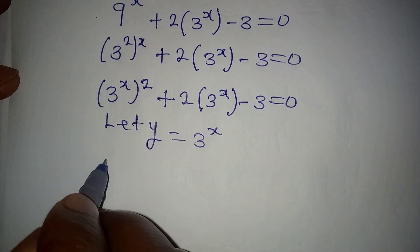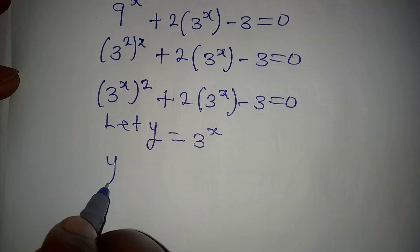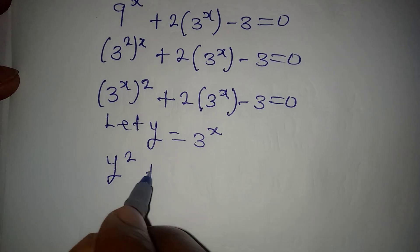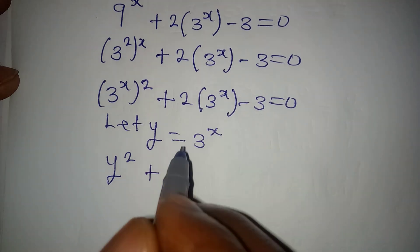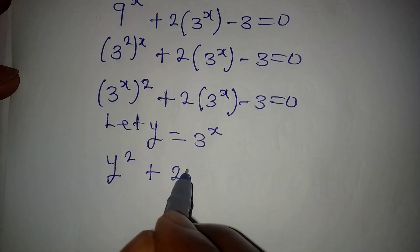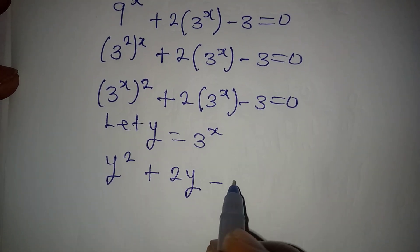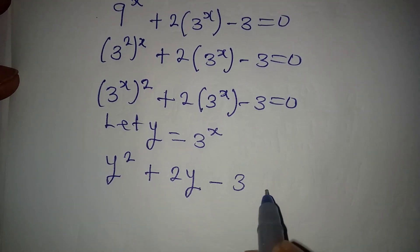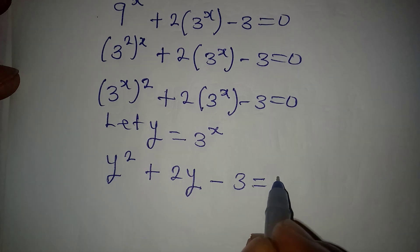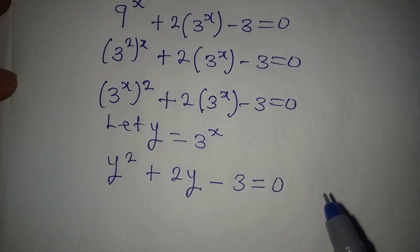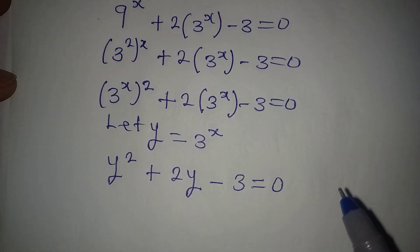Let y be equal to 3 to the power of x. This means we'll be having y squared plus 2y minus 3 equal to 0.